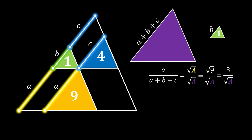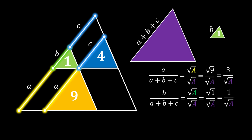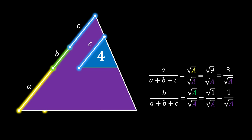Those two triangles are also similar, so we will use the same rule. We can say that the relation between their sides is equal to the relation between the square roots of their areas. Since we know that the area of the green triangle is equal to 1, we can substitute this value and get that this relation is equal to 1 over the square root of the area of the big triangle.